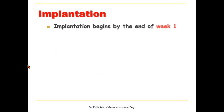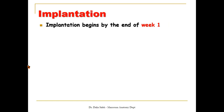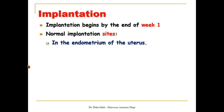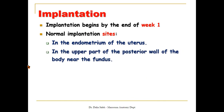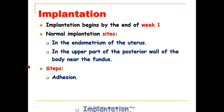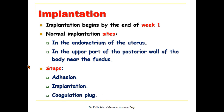Implantation begins by the end of the first week of development. The normal implantation site is inside the endometrium of the uterus, at the upper part of the posterior wall of the body near the fundus. Implantation proceeds through these steps: first, adhesion of the blastula to the endometrium; then implantation; and finally, formation of a coagulation plug.